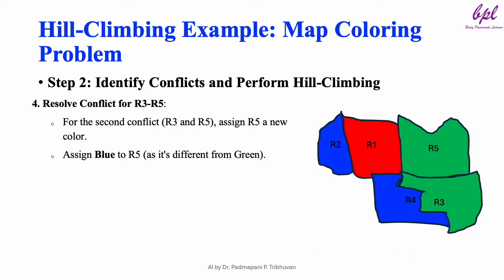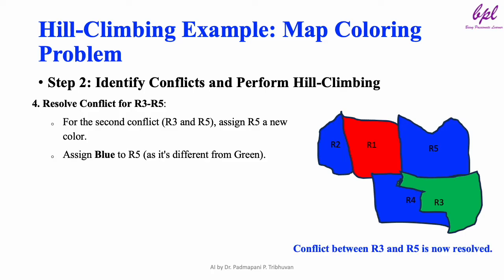Next, we resolve the conflict for R3 and R5. For this second conflict, we assign R5 a new color — blue — as it is different from green. The new color assignment is: R1 red, R2 blue, R3 green, R4 blue, R5 blue. The conflict between R3 and R5 is now resolved.